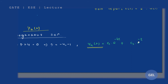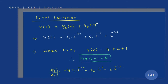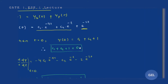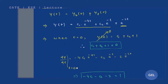You will get your particular solution as e^(−2t). The homogeneous solution is c1·e^(−4t) + c2·e^(−t). So the total response is homogeneous plus particular solution. At t = 0, y(0) = c1 + c2 + 1. It is given that y(0) = 0 and dy/dt at t = 0 equals 1. When t = 0, y(0) = c1 + c2 + 1, and since y(0) = 0, we get the first equation: c1 + c2 + 1 = 0.